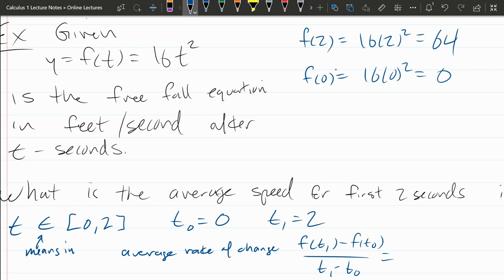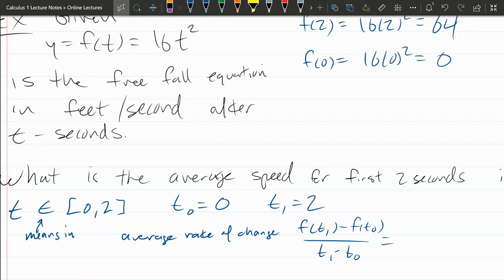Your homework question is probably going to be a slightly more complicated formula, and I just use slightly easier ones in the example, so we don't spend too much time on computation here. So again, the first one, f of 2, that's this value right here, that's 64.